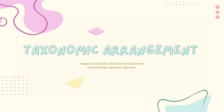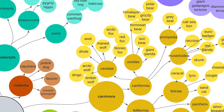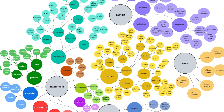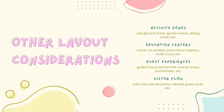The next structure is taxonomic arrangement, which is actually what we're going to use in our Coral Cove Zoo. We'll talk more about this in just a second, but this involves arranging animals based on their families, classes, and species.